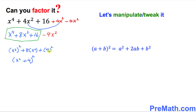And here we have left the negative 4x² term. So putting it all together, we have (x² + 4)² minus 4x², where x² + 4 was our a and 4 was our b.